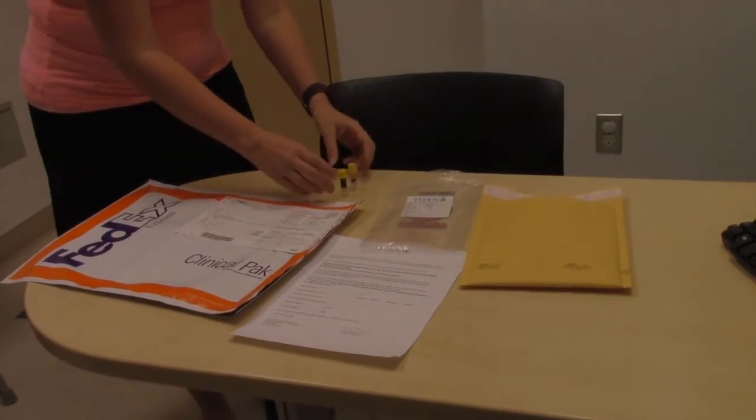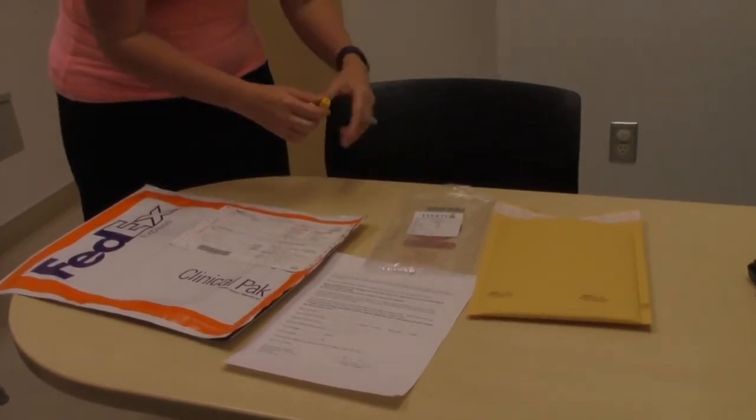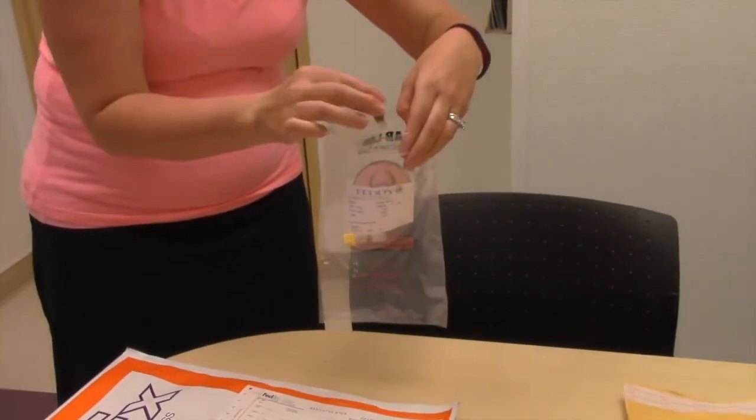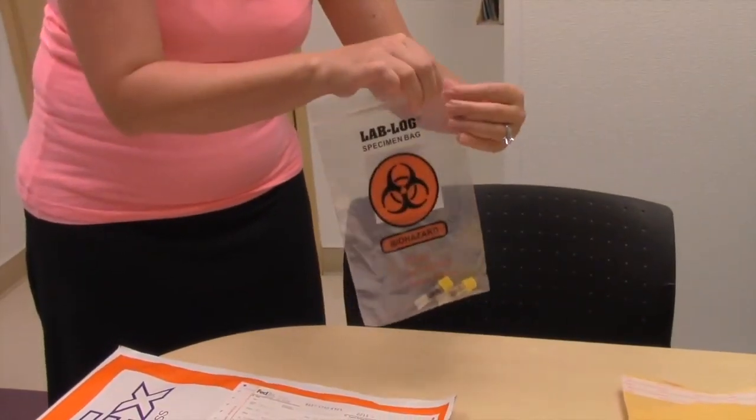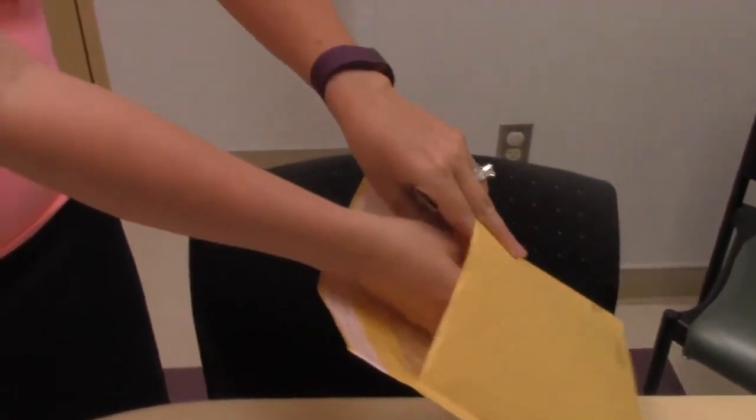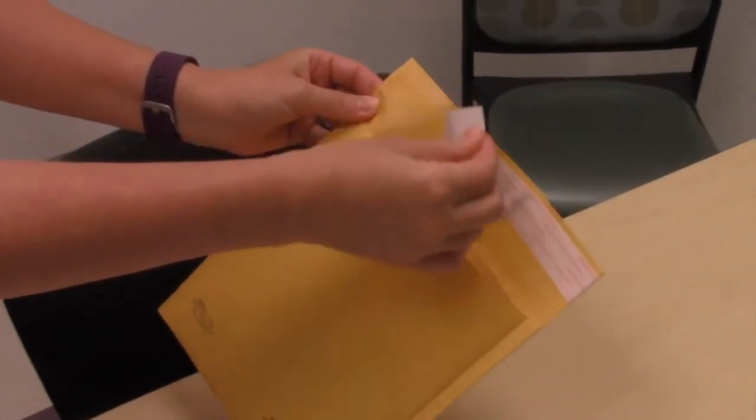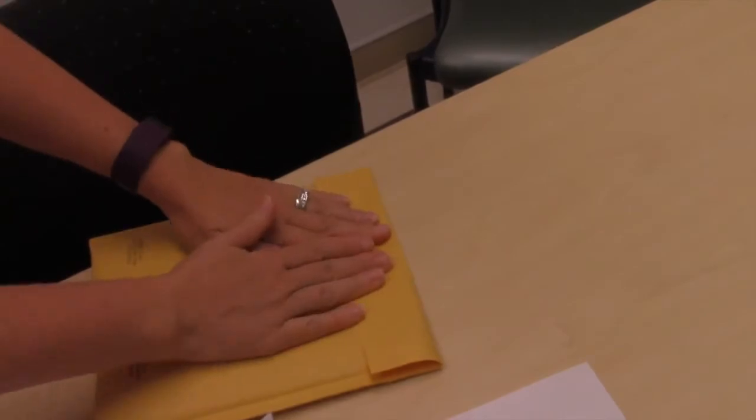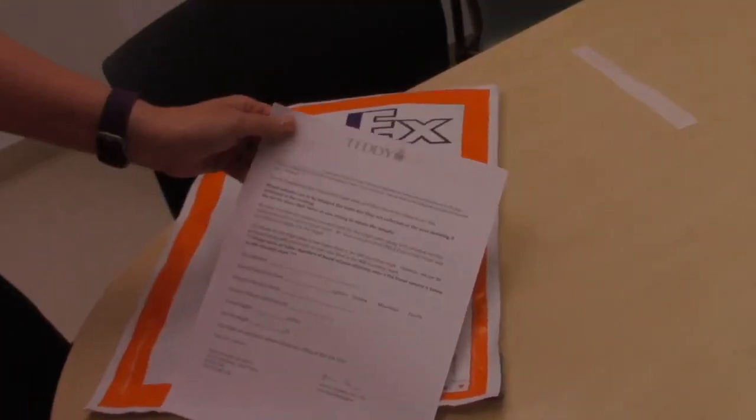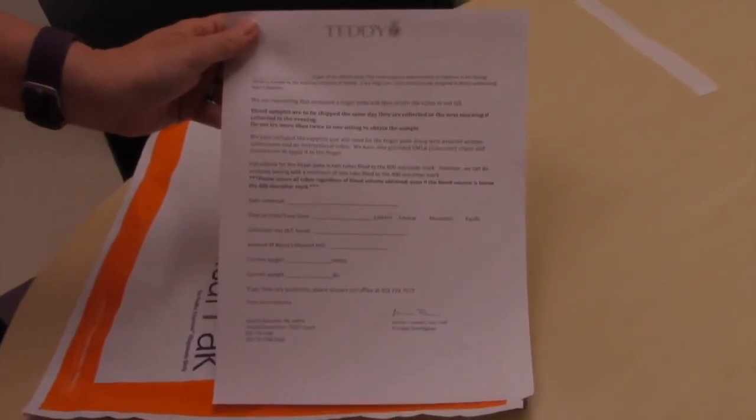Finally, make sure the tubes are capped tightly and put the tubes of blood in the biohazard Ziploc we have provided. Roll the Ziploc bag and place it in the padded envelope. Place the padded envelope in the large FedEx envelope. Please complete the blood collection form and place it in the large FedEx envelope as well.